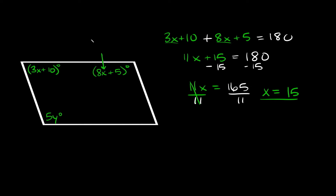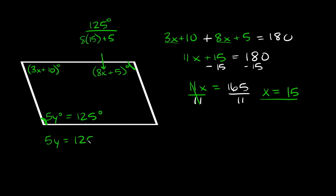Now that we know x, we can plug it into one of these. Plugging into 8x plus 5: 8 times 15 is 120, and 120 plus 5 is equal to 125. So this angle is 125 degrees. Now to solve for y, we use the fact that opposite angles are equal to each other, so the opposite angle must also be 125 degrees. Setting 5y equal to 125 and dividing both sides by 5, we get y is equal to 25.